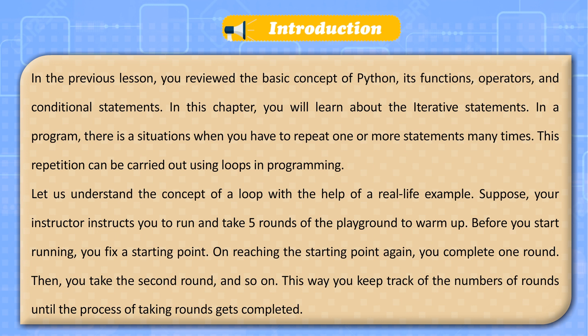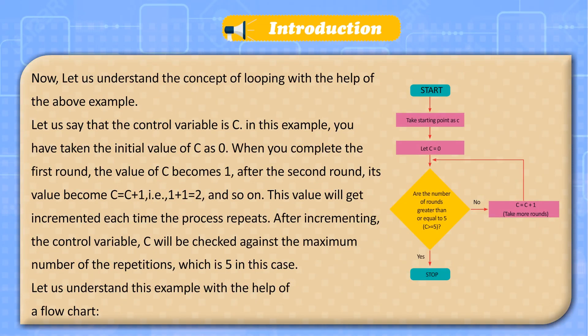Suppose your instructor instructs you to run and take five rounds of the playground to warm up. Before you start running, you fix a starting point. On reaching the starting point again, you complete one round. Then you take the second round, and so on. This way you keep track of the number of rounds until the process of taking rounds gets completed. Now let us understand the concept of looping with the help of the above example.